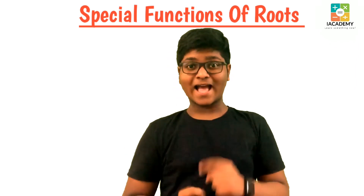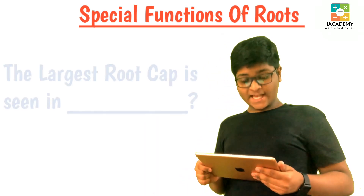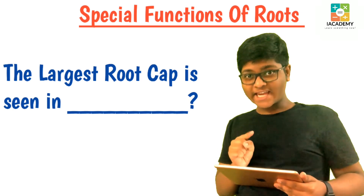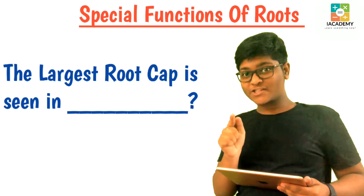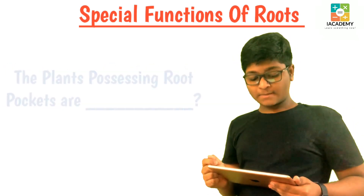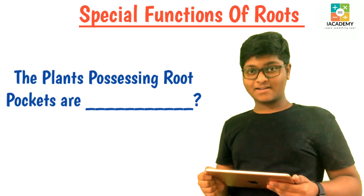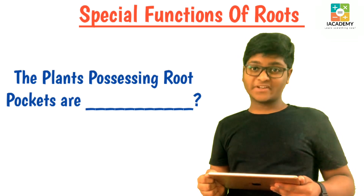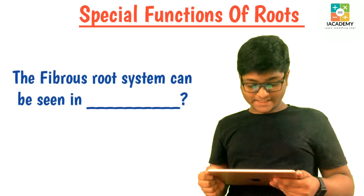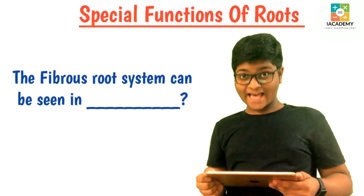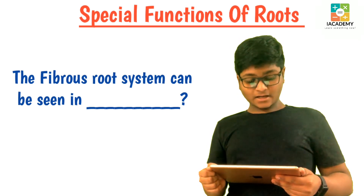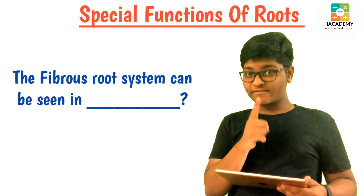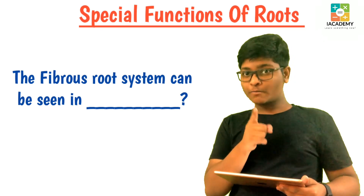Do you want a chance? Make sure to answer them correctly. The first question is: the largest root cap is seen in which plant? The second question: the plants possessing root pockets are? The third question: the presence of fibrous root system is the characteristic of which plant? Is the fibrous root system seen in monocot or dicot? I've covered these in my previous video, so anyone who watched it should know the answers.